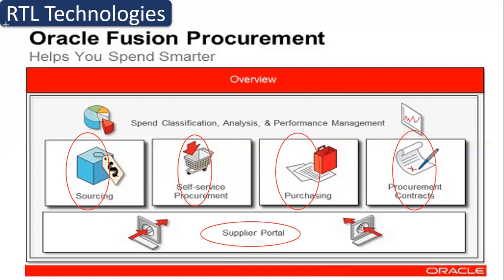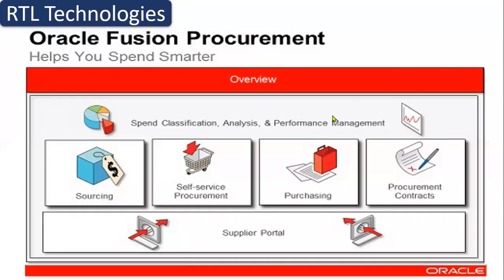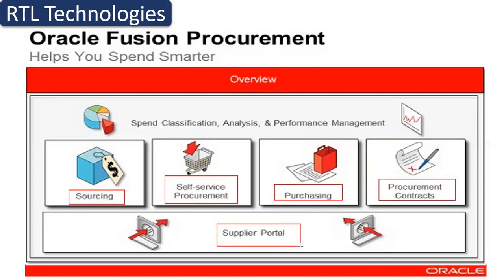So these are the main five products that together make up Oracle Fusion Procurement. If you are clear with only the purchasing module, you should clearly state that — for example, 'I am comfortable with the purchasing module implementation as a functional or technical consultant.' But if you say you are perfect in the full procurement module, they will expect knowledge of all five modules: Sourcing, Self-Service Procurement, Purchasing, Procurement Contracts, and Supplier Portal.